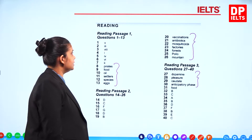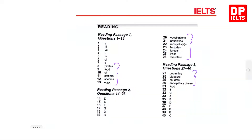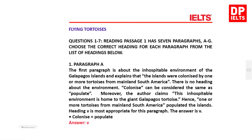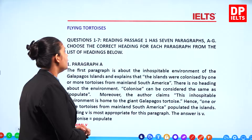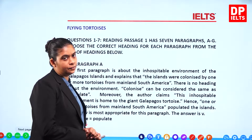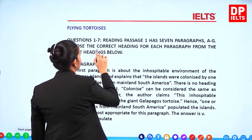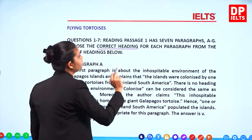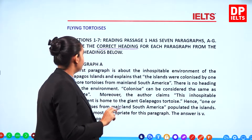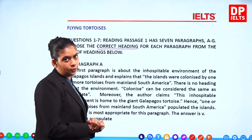So let's discuss the answers now. Passage 1 — Flying Tortoises, questions 1 to 7. Reading Passage 1 has 7 paragraphs A to G. We have to choose the correct heading for each paragraph from the list of headings below.